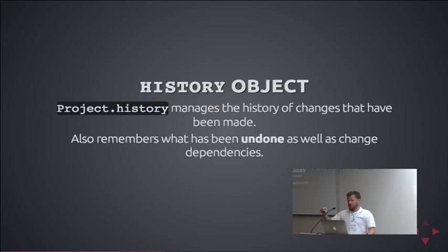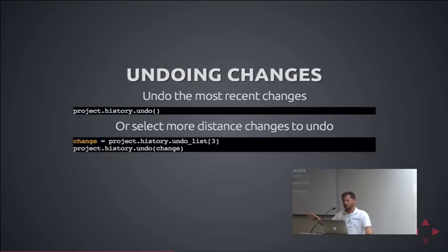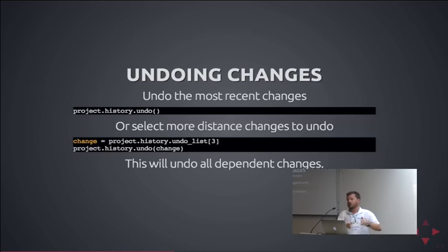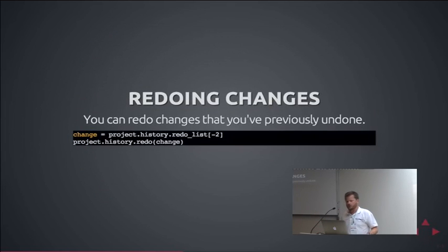To undo changes you say project.history.undo — very straightforward. You can also select specific points in the past to undo, going maybe four refactorings back. This is transitive: if you undo your first change, it has to undo all the ones that came afterwards, otherwise it would just corrupt your code.